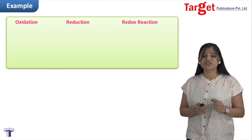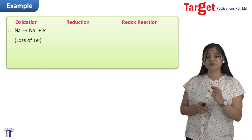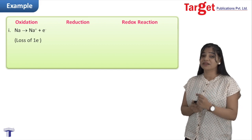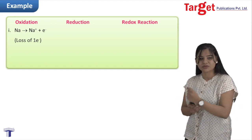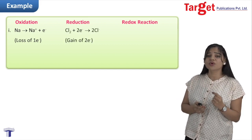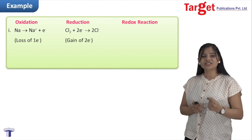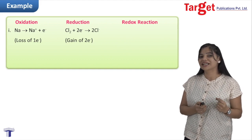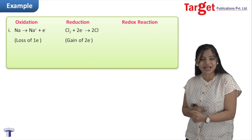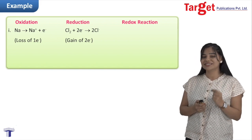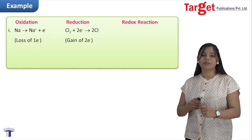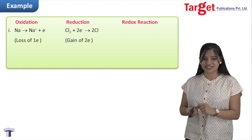The first oxidation reaction: sodium loses one electron to form the cation Na⁺. For the reduction reaction, chlorine — each chlorine atom has the tendency to gain one electron forming the chlorine anion Cl⁻. Since chlorine is diatomic in nature, we balance the reaction by adding two electrons.